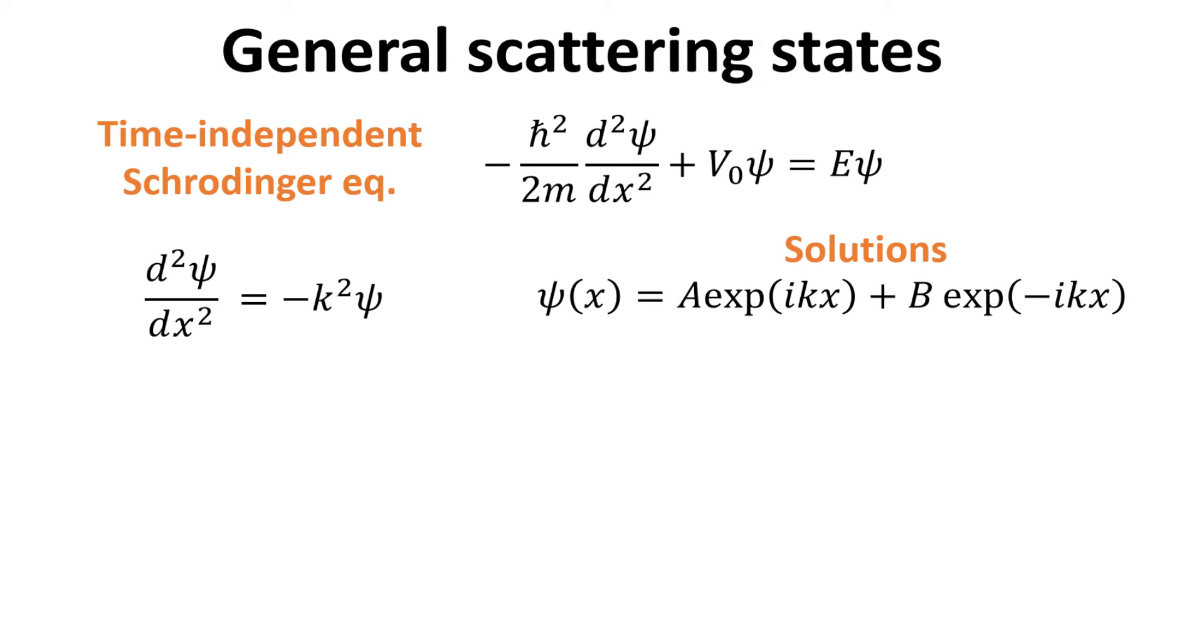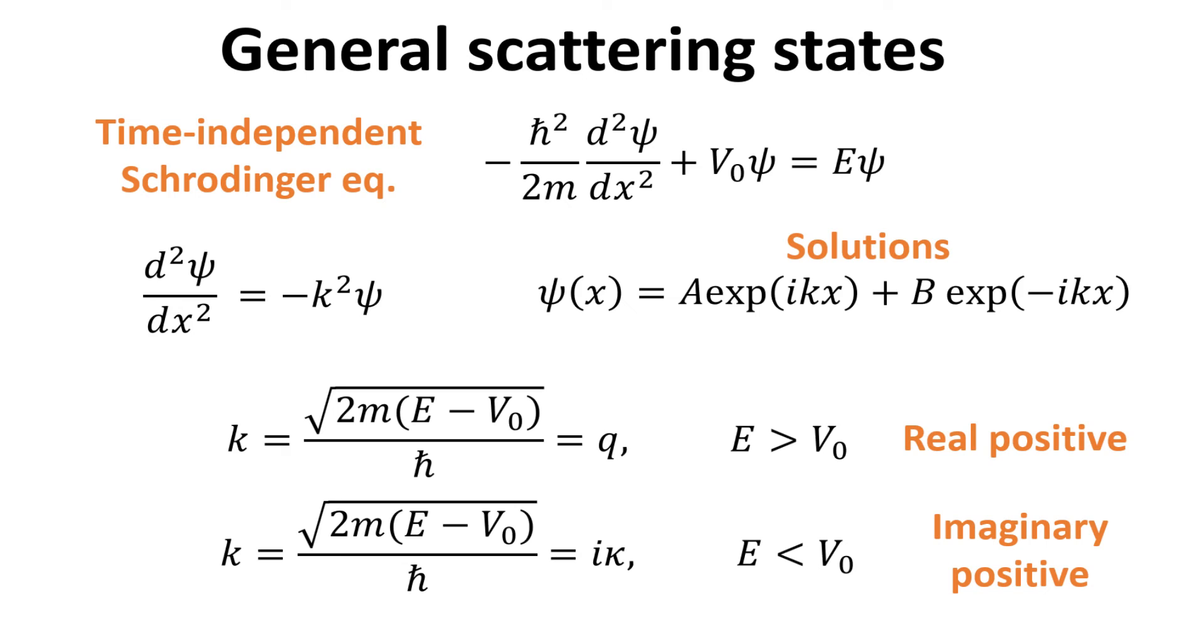Alternatively, we can also incorporate both the evanescent and propagating scattering solutions using a single complex wave vector k. Written as follows, k as defined will be real positive when energy E is larger than V0, and imaginary positive when E is smaller than V0. This will be the description we use for the remainder of this video.